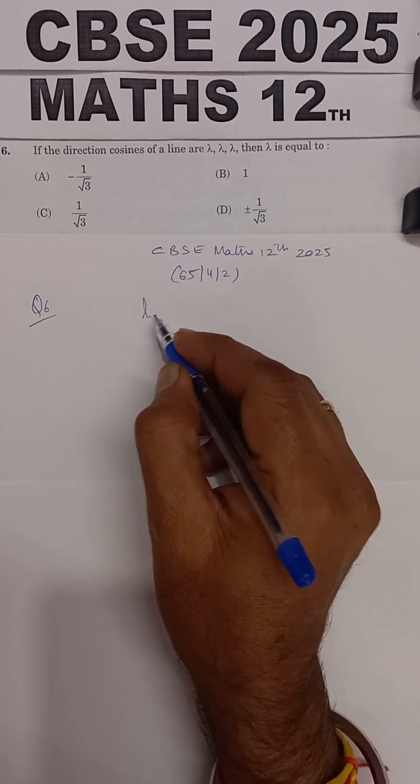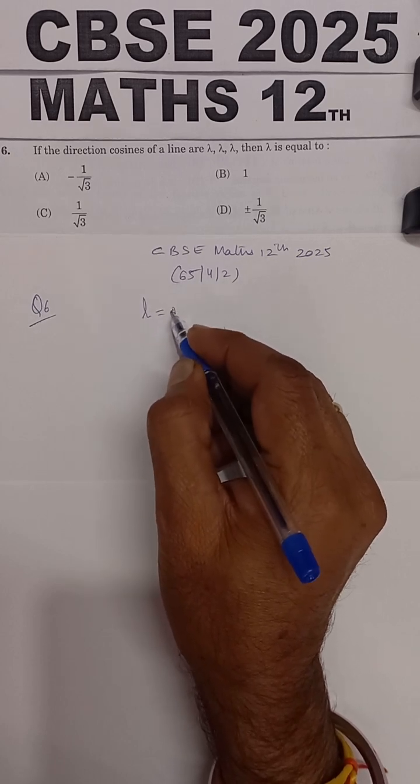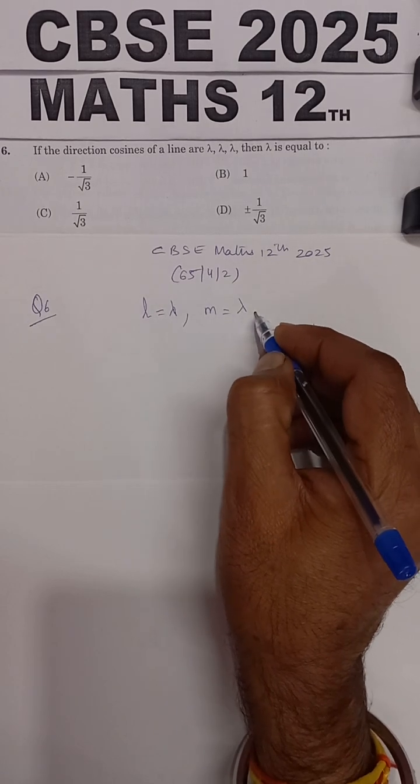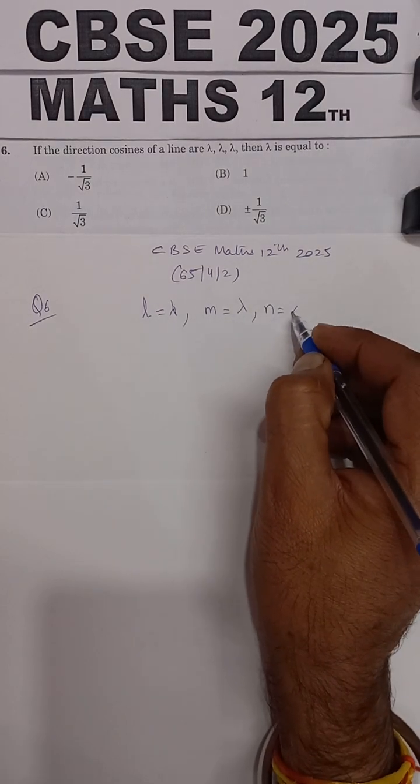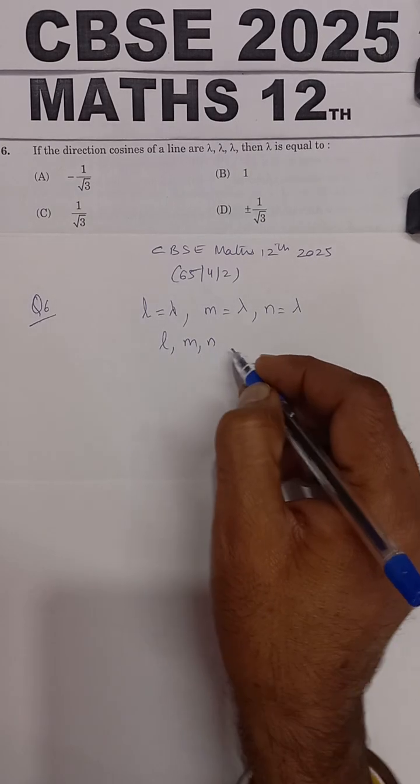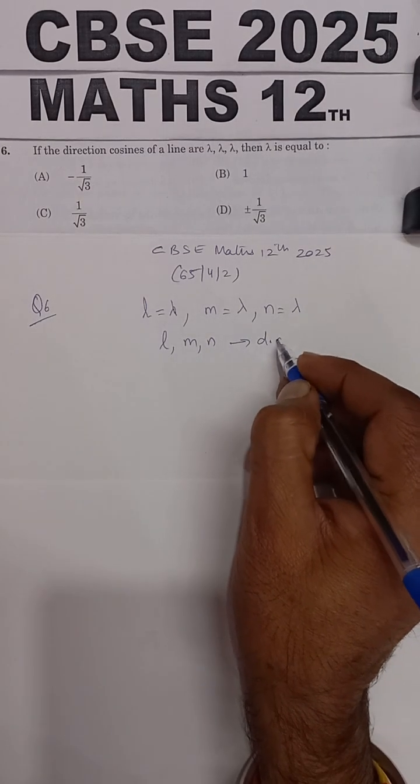Now we have seen direction cosines, meaning L is equal to lambda, M is also equal to lambda, and N is also equal to lambda, where L, M, and N are the direction cosines (DCs).